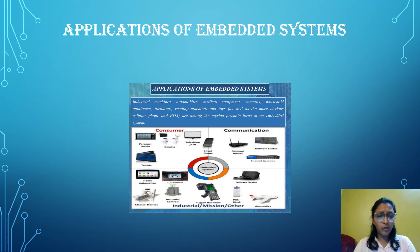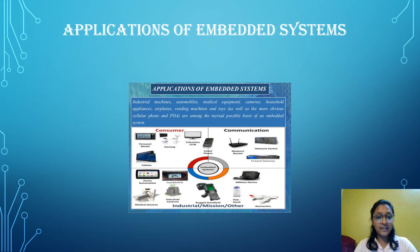In home automation, Embedded Systems are used to control and manage various devices and appliances. These systems can automate tasks such as light control, temperature regulation, security systems and smart home integration.